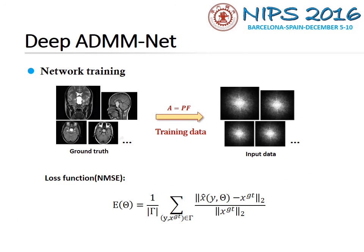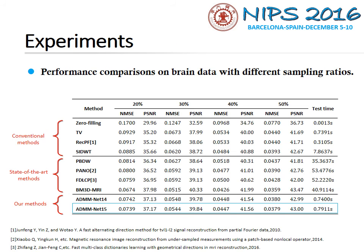In the training phase, we take the reconstructed MRI image from fully sampled data as the ground truth. The training set contains pairs of ground truth MRI images and undersampled k-space data. We choose normalized mean square error as the loss function for back propagation.